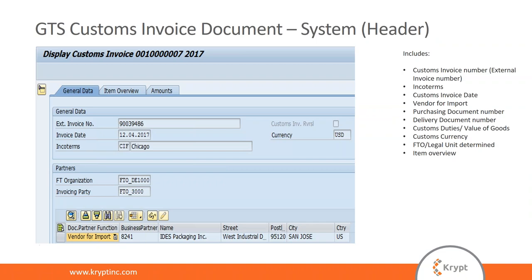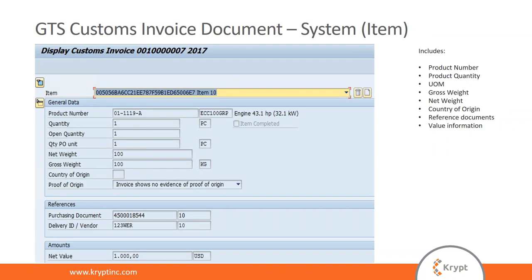This is what the invoice object actually looks like in GTS. At the header level of the invoice document, you have fields such as the external invoice number, the foreign trade org, incoterms, partner information, currency data, and an item overview with item-specific data. At item level, you'll find data associated with just the items such as materials, quantities, and units of measure. You also have proof of origin, which allows you to maintain the proof of origin directly in the customs invoice. If you integrate this invoice into an import declaration, the system will automatically trigger a preference document type to be incorporated into the declaration.